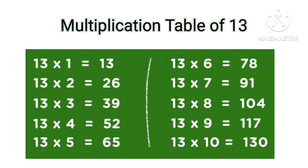Table of 13 (continuing): 13×8=104, 13×9=117, 13×10=130.